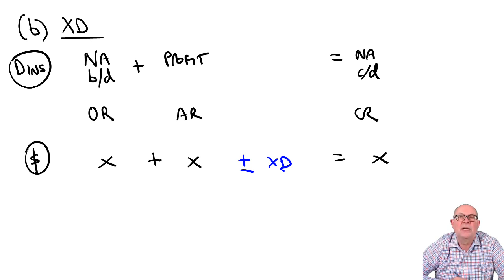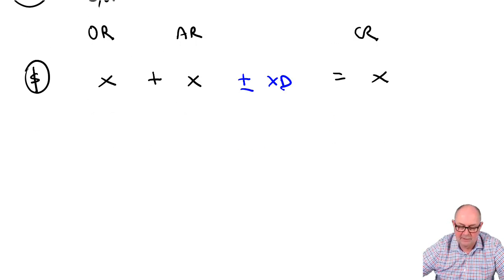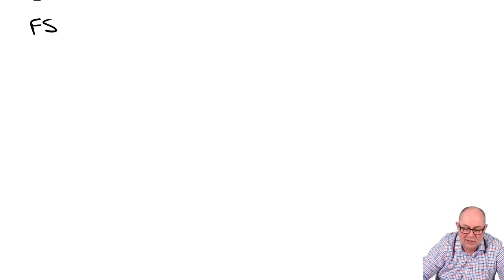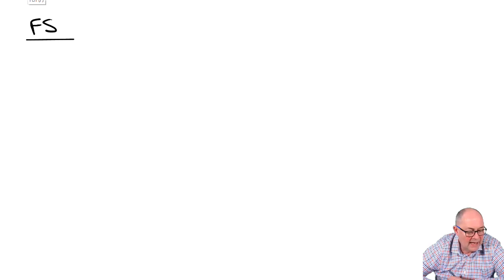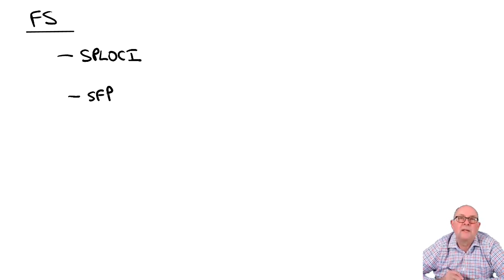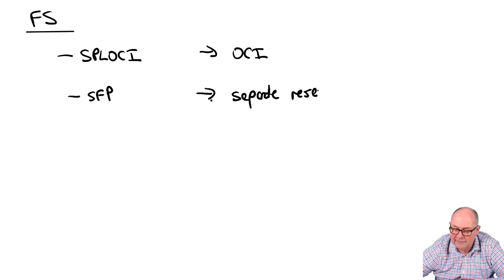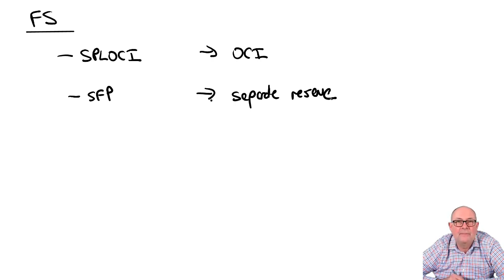The translation process means that the accounts will no longer balance. The second thing we're asked to explain is the presentation of the exchange difference in the financial statements. The financial statements are the P&L (SPLOCI) and the SOFP. In the P&L the exchange differences are presented in OCI. In the balance sheet the exchange differences are presented as a separate reserve. You could also mention that some of the exchange differences are allocated to the NCI, if you had time.